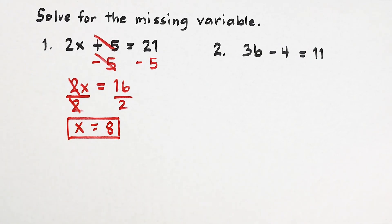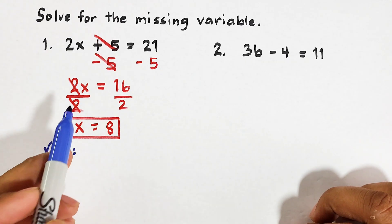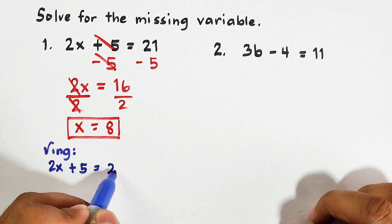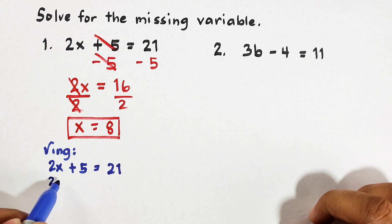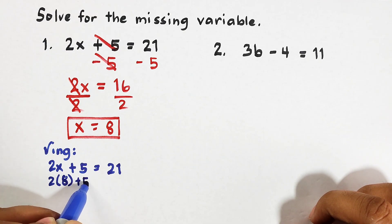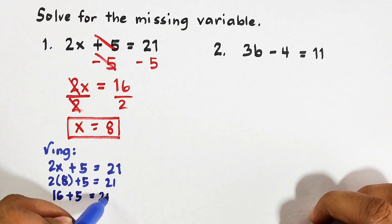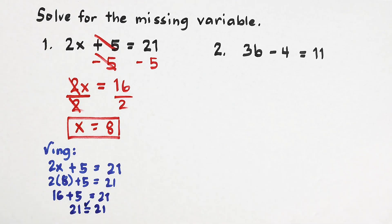If you want to verify whether your answer is correct, we can do a checking. We will use the original equation: 2x plus 5 is equal to 21. We substitute the value of x, which is 8: this is 2 times 8 plus 5 is equal to 21. 2 times 8 is 16, plus 5 is equal to 21. And 16 plus 5 is 21 — they are equal, so x equals 8 is the correct answer.